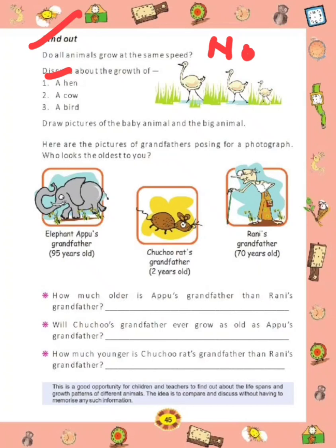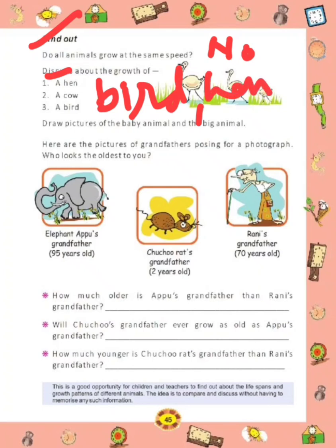The fastest growth is the bird's. So write first: bird. After that: the growth of hen. And next: cow. Now you have to draw a picture of a baby animal and the big animal in your notebook.